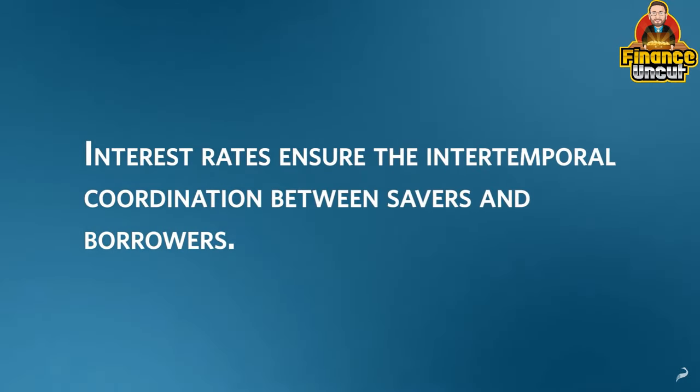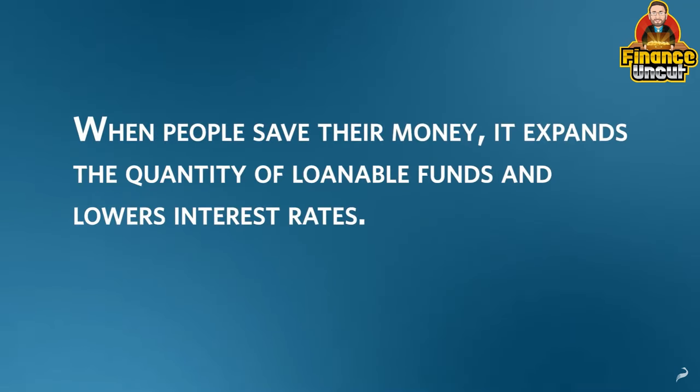To understand the Austrian theory of the business cycle, we need to understand what interest rates do. Interest rates ensure the intertemporal coordination of savers and borrowers. When people want to save more, that expands the quantity of loanable funds available and lowers interest rates. In a properly functioning economy, lower interest rates enable borrowers to invest in capital goods and engage in longer-term structures of production. What the Austrian theory describes is a situation where the interest rate fails to perform that function because central bank credit expansion has created a false interest rate signal.